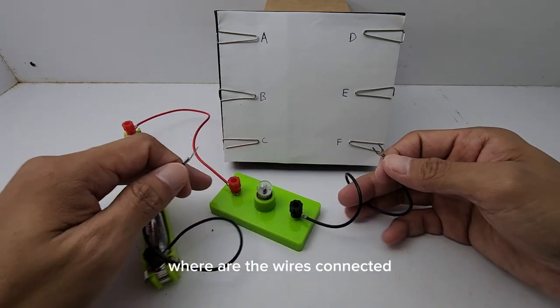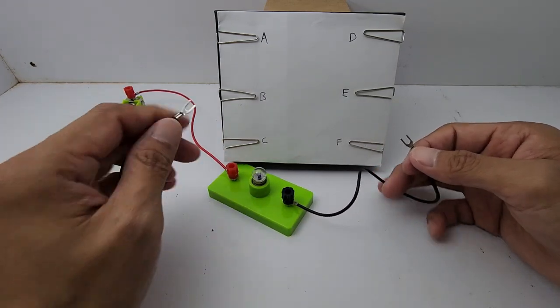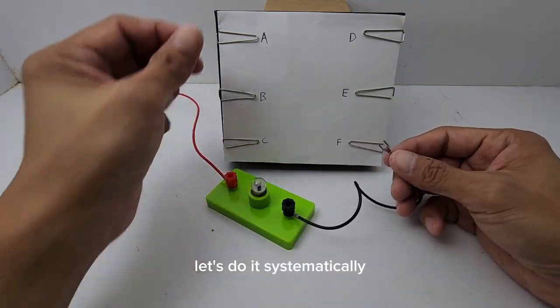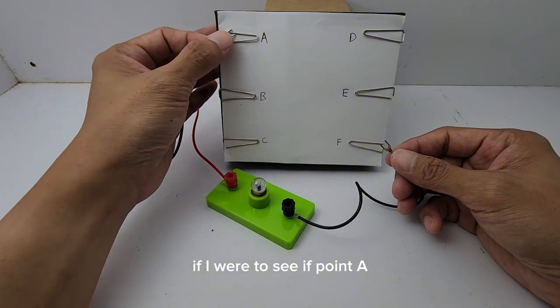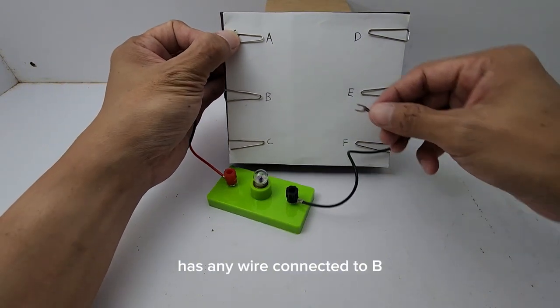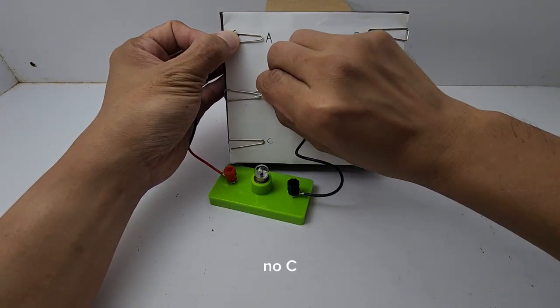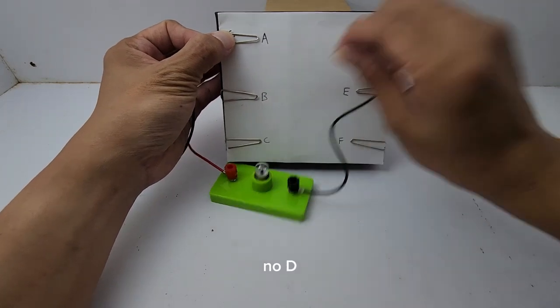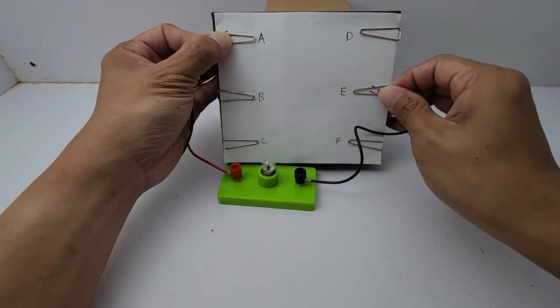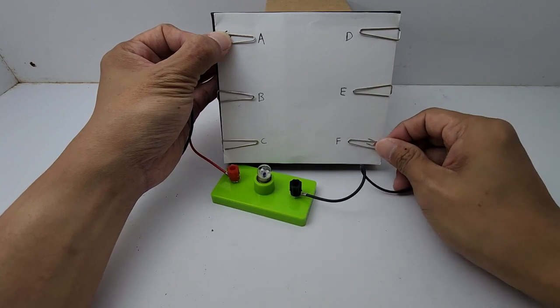Let's test where are the wires connected. Let's do it systematically. If I were to see if point A has any wire connected to B, A, no, C, no, D, no, E, no, F, no.